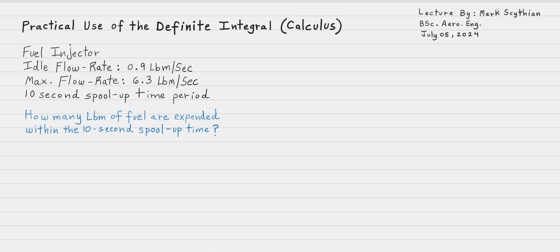What this means, it's not a linear relationship. If we were to take the final or maximum flow rate of 6.3 pounds mass per second and then subtract the idle flow rate of 0.9 pounds mass per second, followed by dividing this difference into 10 seconds.